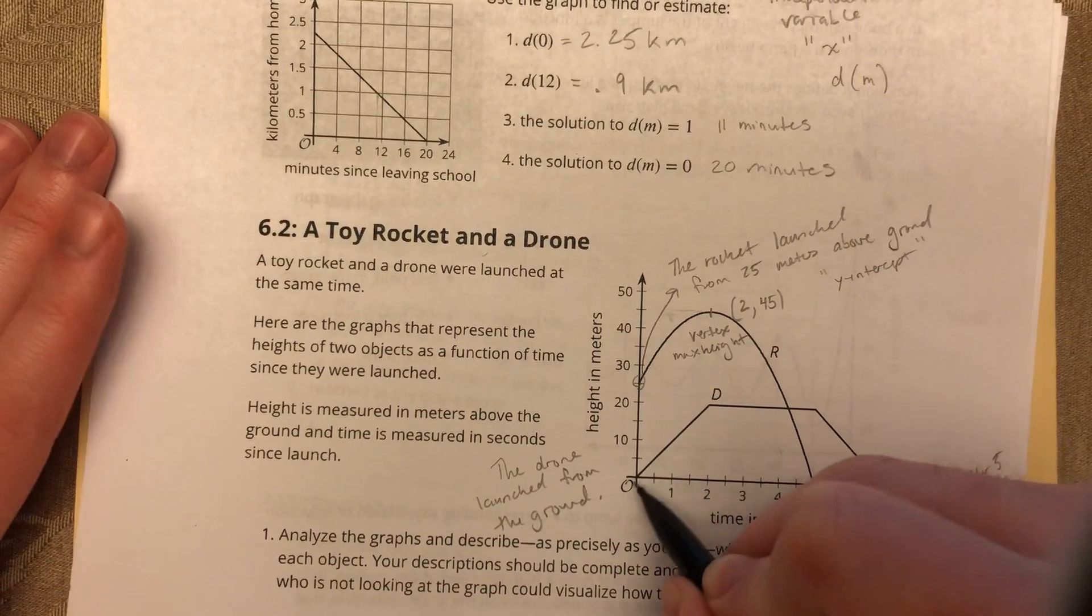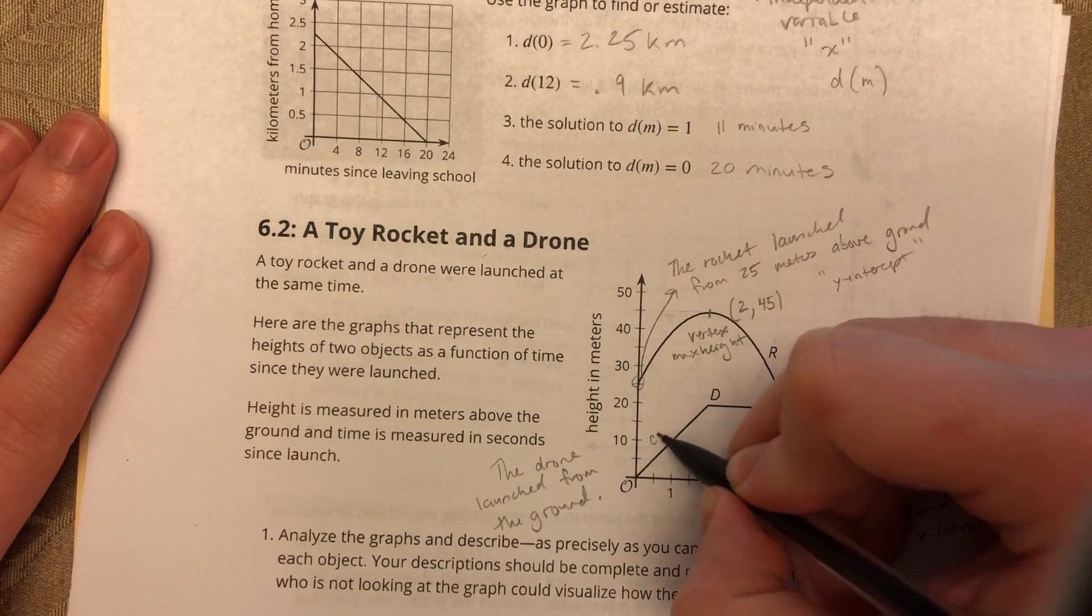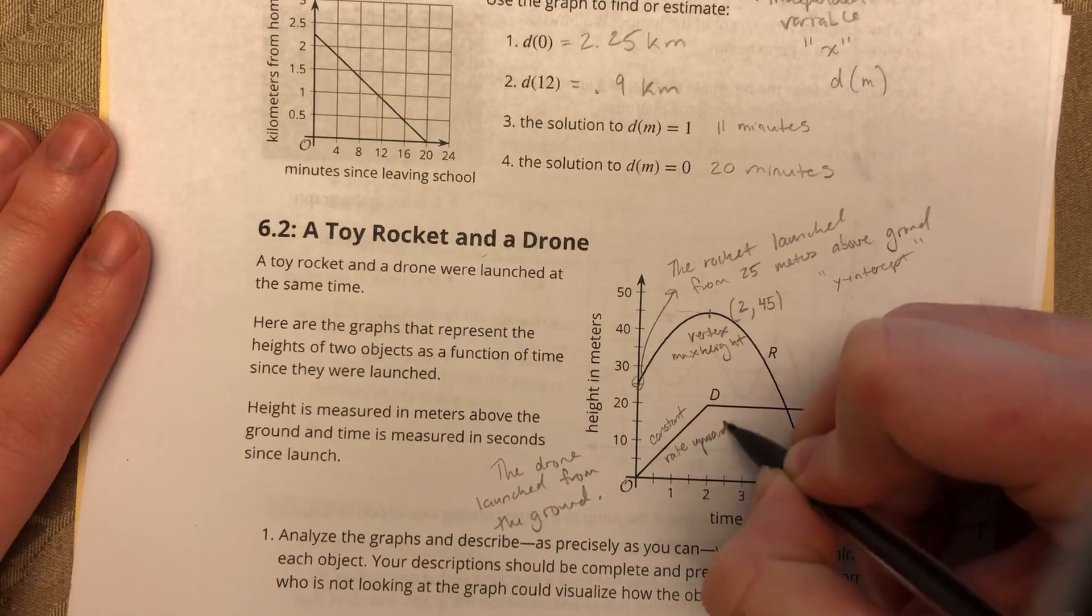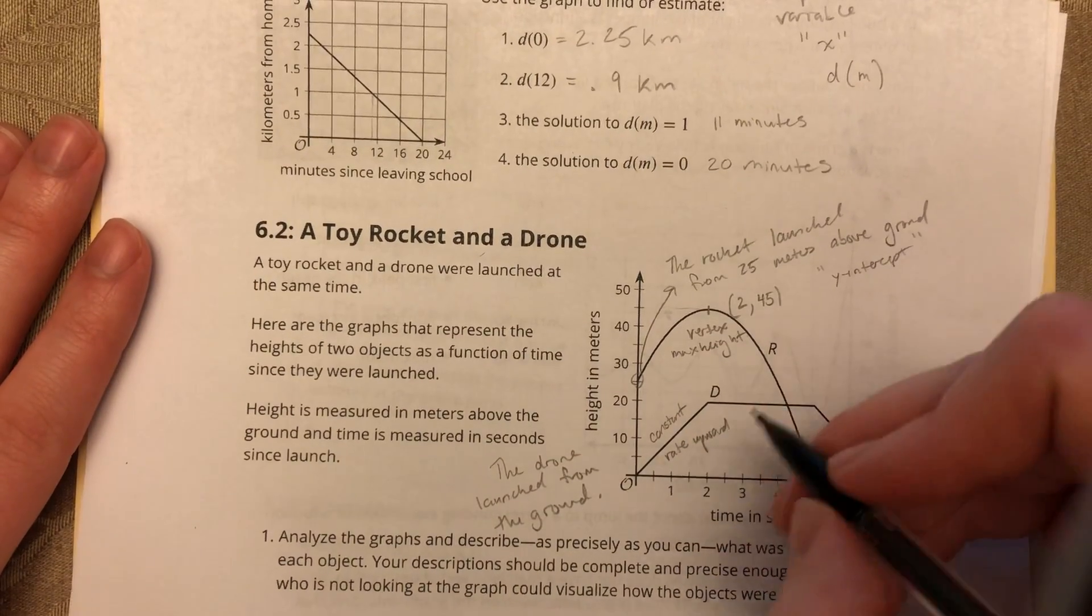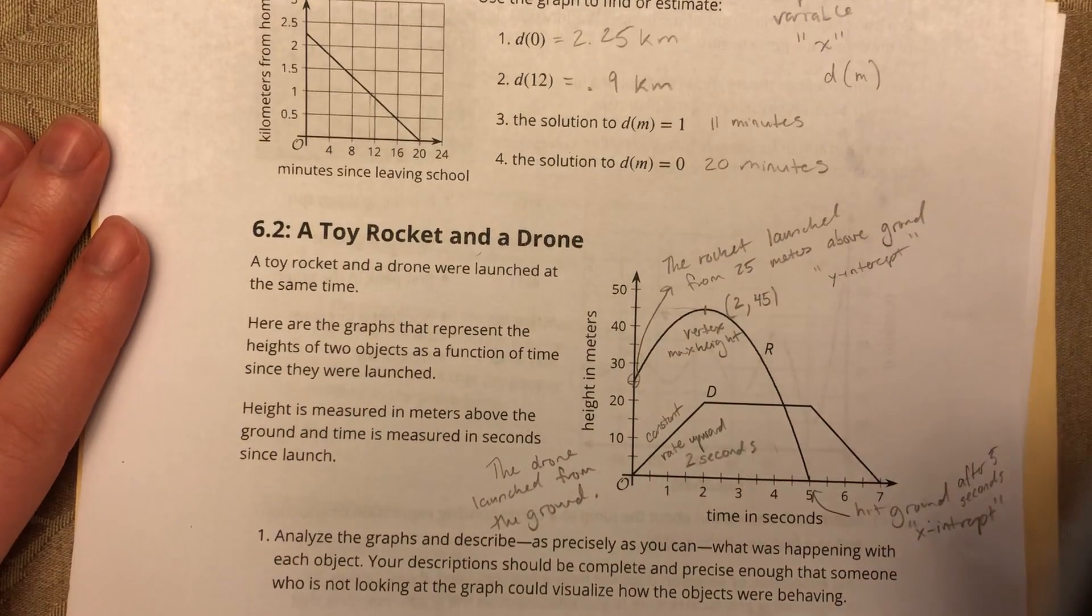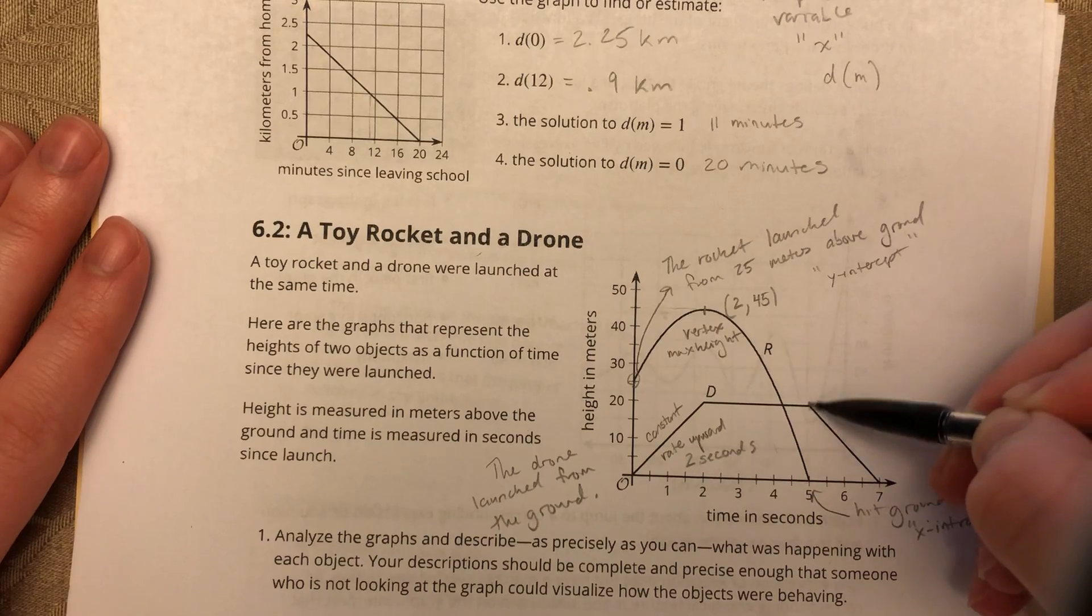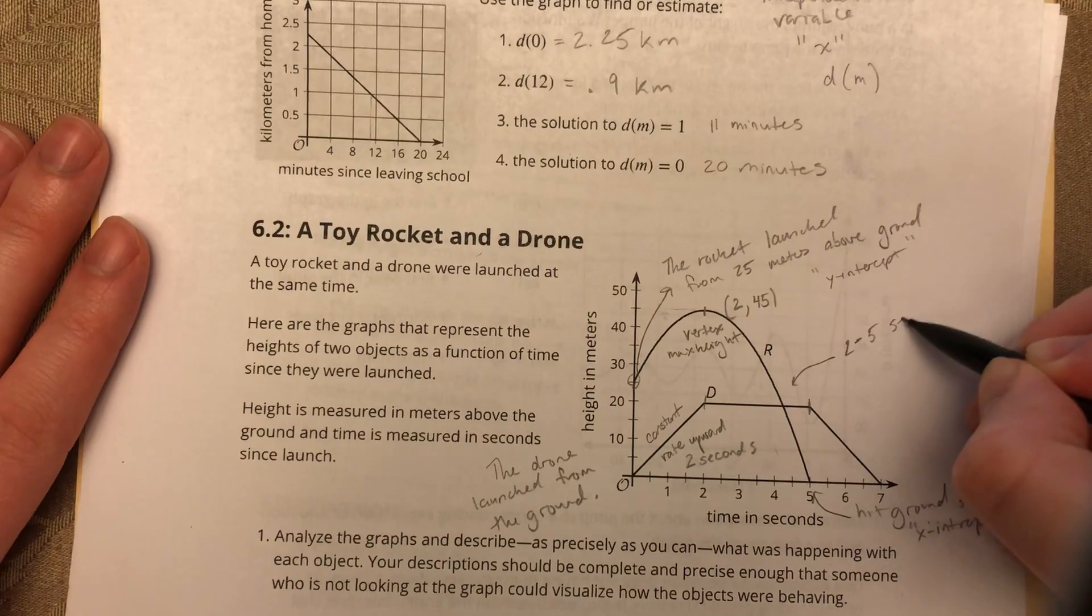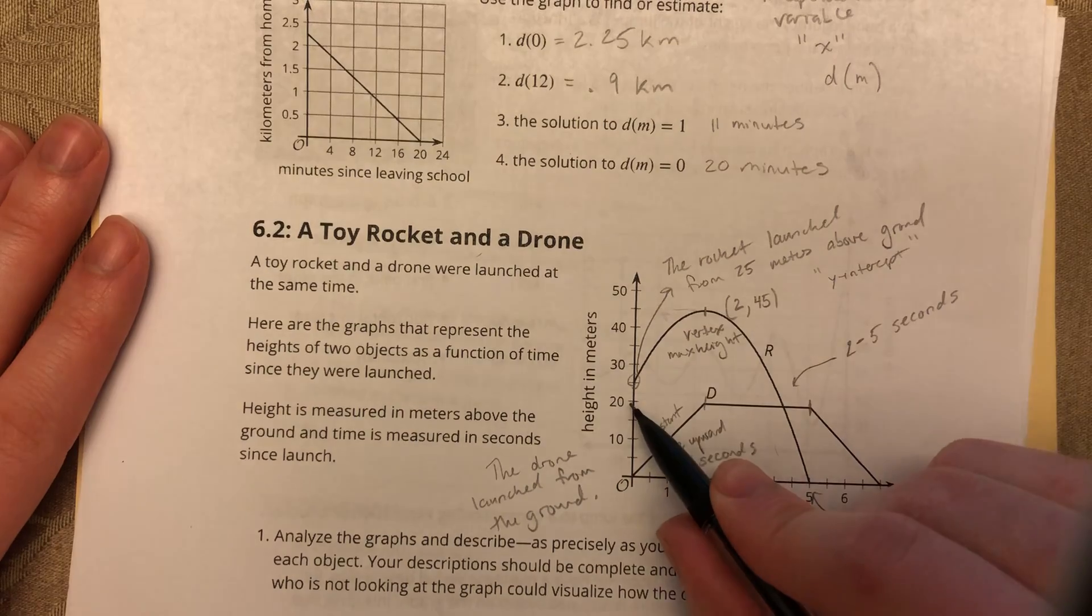Alright, it traveled upward. We know if it's linear, that means we've got a constant rate. And we know it's upward because my slope is positive. And it traveled upward for, I would say, two seconds. And then after two seconds, from two seconds to five seconds, so I'll put a little arrow here, from two to five seconds.